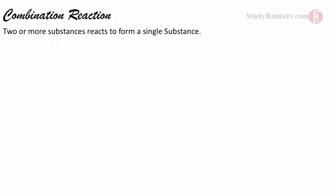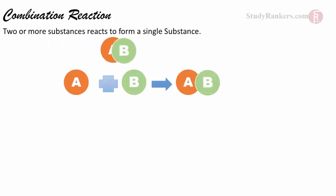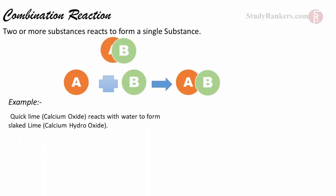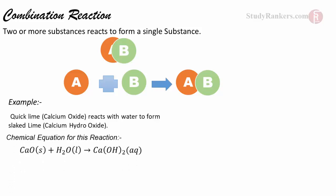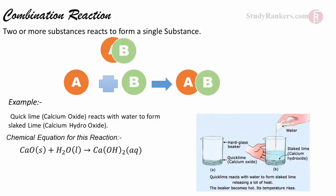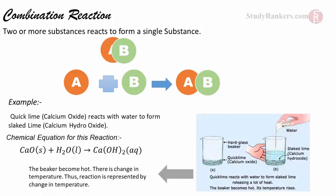In a combination reaction, 2 or more substances combine and form a new substance. For example, quick lime (calcium oxide) reacts with water to give calcium hydroxide, which is known as slaked lime. We can write a proper balanced equation for this process. The beaker in which the reaction is taking place becomes hot, indicating a change in temperature, which indicates the chemical reaction.